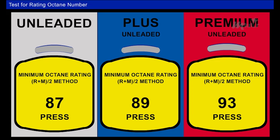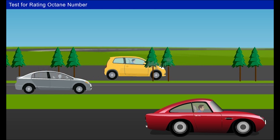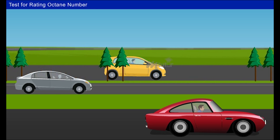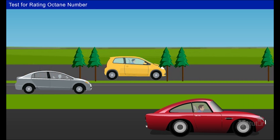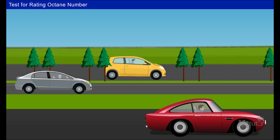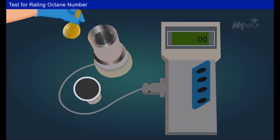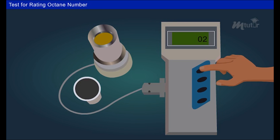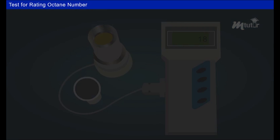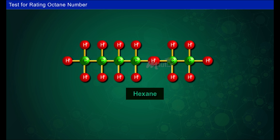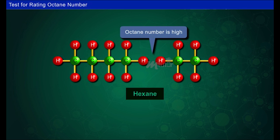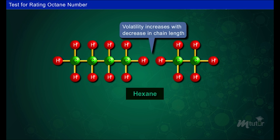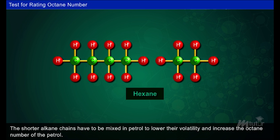When fuels of different grades are produced, it is customary to have them tested for quality in typical test motor engines. This method is time consuming and expensive, so it has been replaced by more modern NIR spectroscopy — based on a previous calibration, the octane number of the fuel is read out on a digital meter. Regarding fuel properties: if the alkane chain is short, the octane number is high, however the volatility of the hydrocarbon increases with a decrease in chain length. Shorter alkane chains must be mixed in petrol to lower their volatility and increase the octane number.